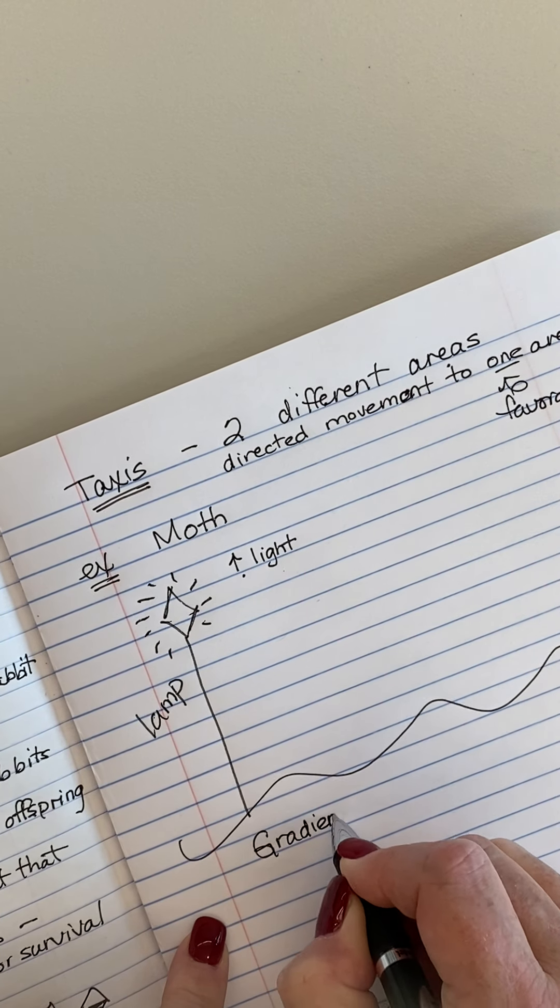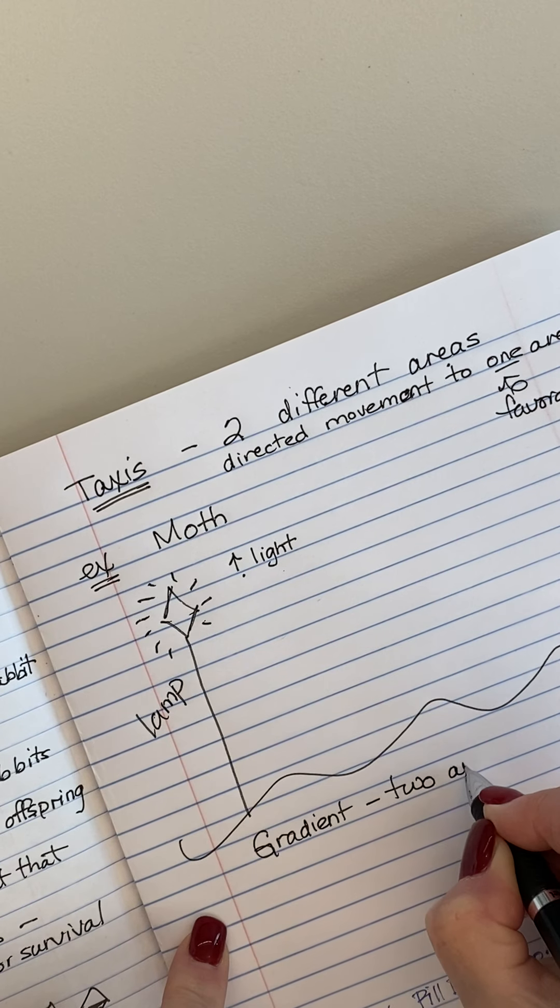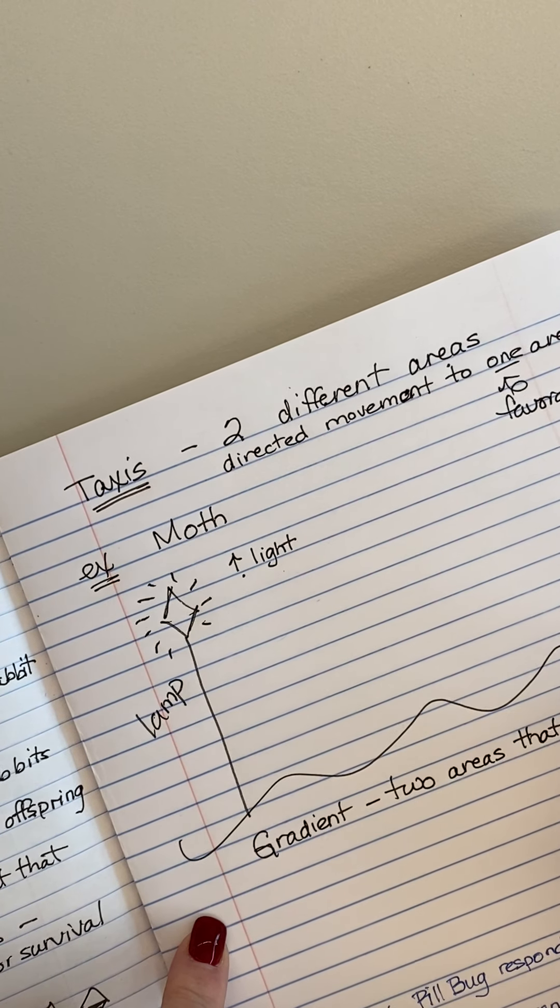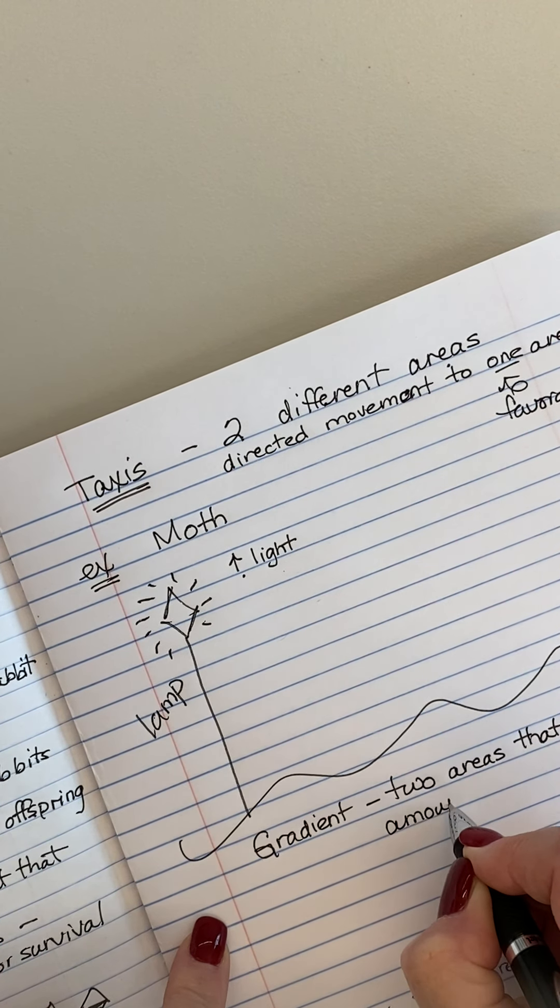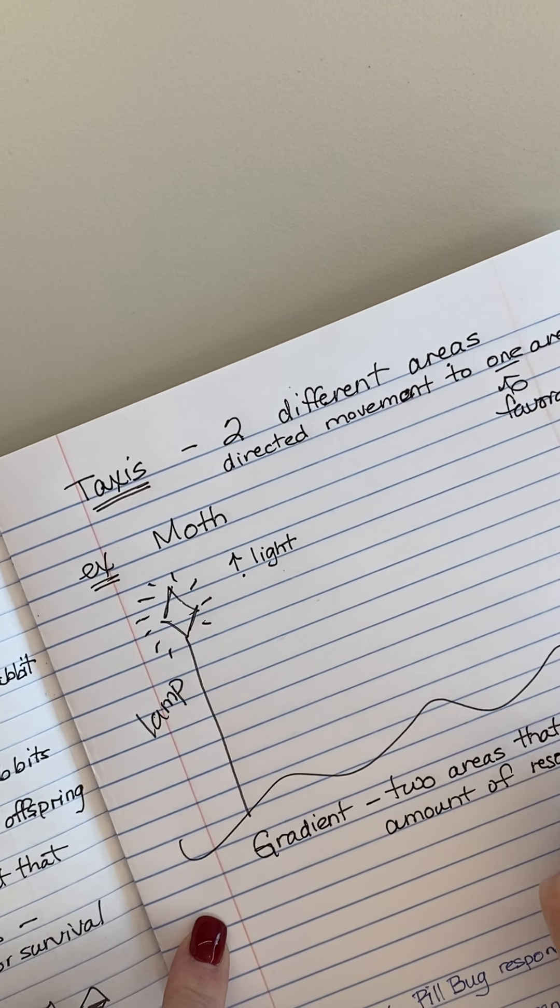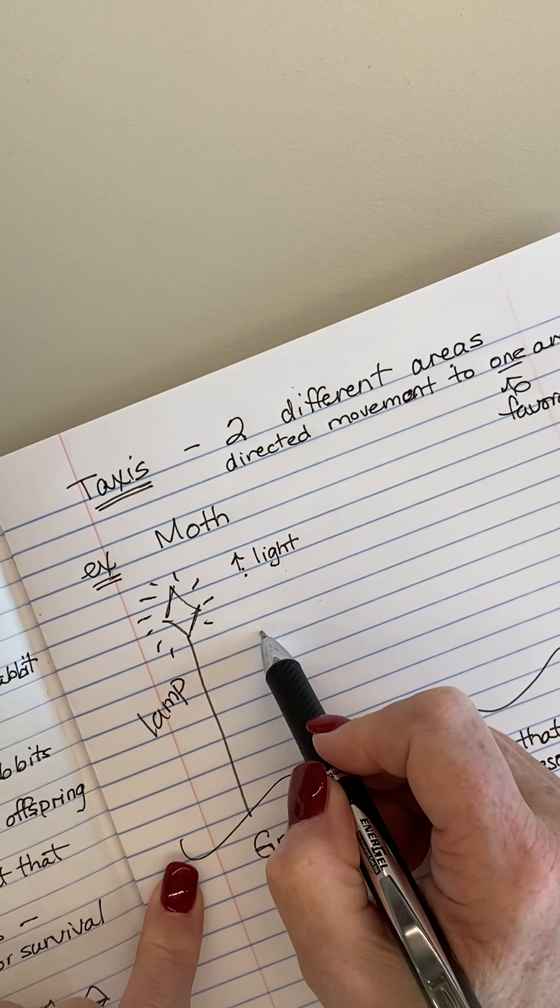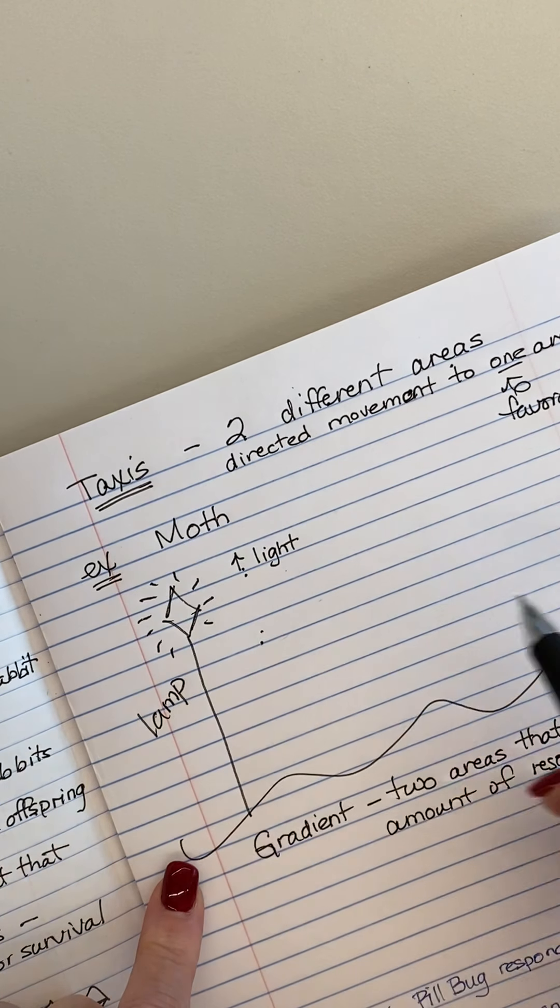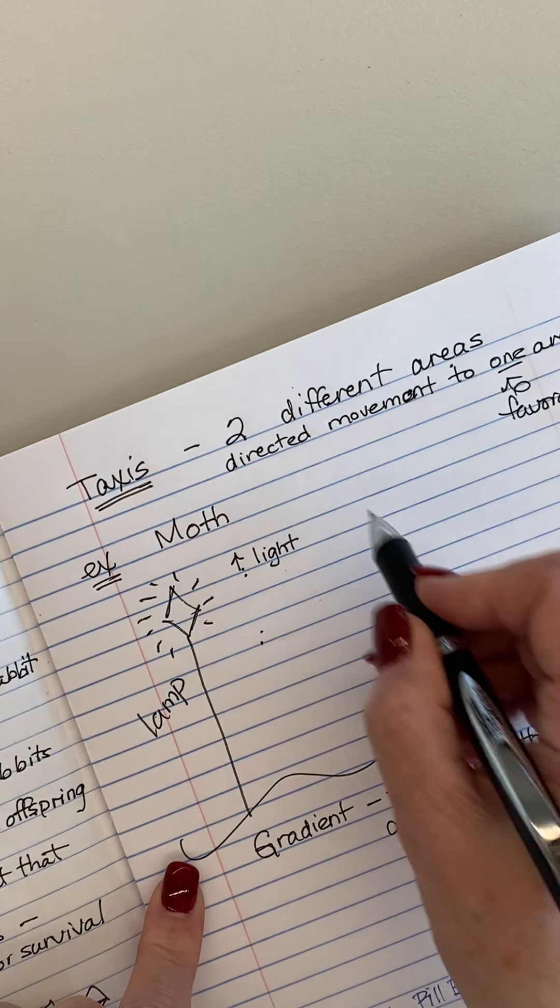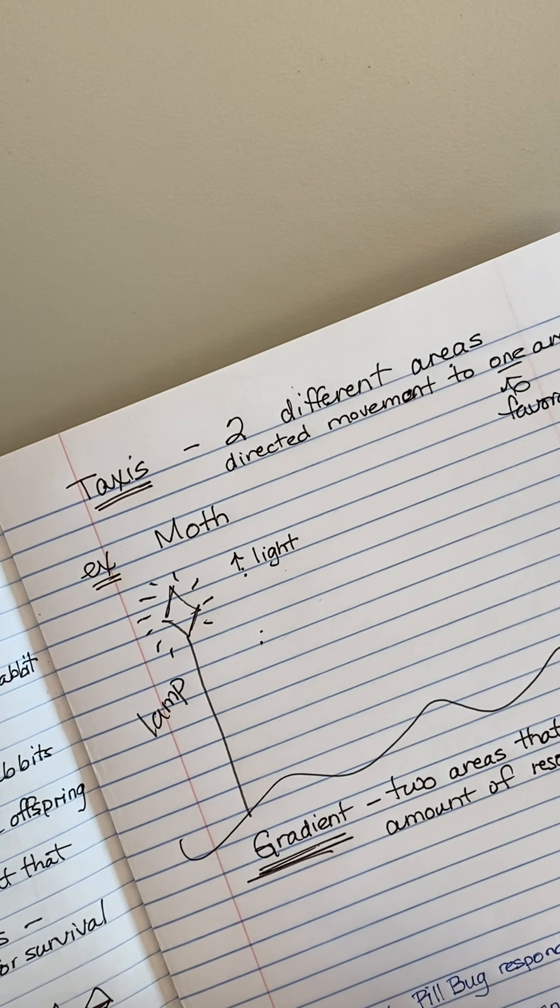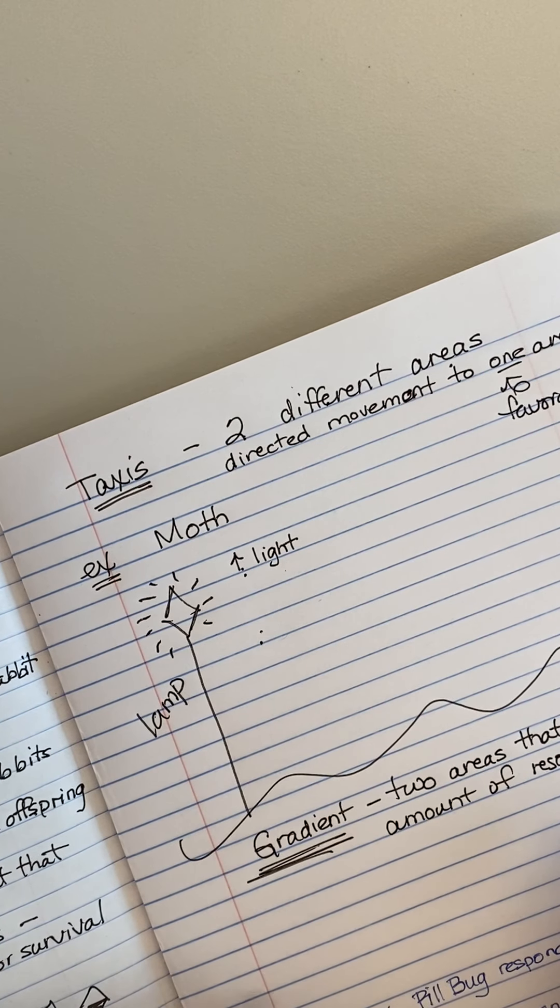When you have two areas that are different in the amount of something that's called a gradient. So a gradient is two areas that differ in the amount of a resource. So it could be resource with a c. So it could be more light, less light. It could be more water, less water, more food, less food, more or less in areas next to each other. That's what a gradient is. Gradient means literally that there's a difference between an area.